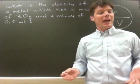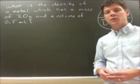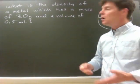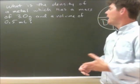Alright, so we're going to take a look at solving a density problem. The question that we're being provided is right here: What is the density of a metal which has a mass of 3.0 grams and a volume of 0.5 milliliters?